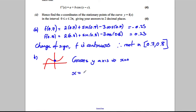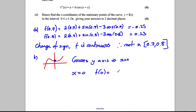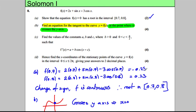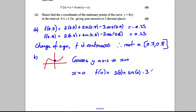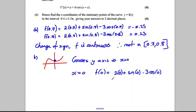We need the y-value, so when x = 0: f(0) = 2(0) + sin(0) - 3cos(0). That's 0 + 0 - 3(1) = negative 3. Let's confirm on the calculator with x = 0 and we get negative 3. So y = -3 and the coordinate we're dealing with is (0, -3).